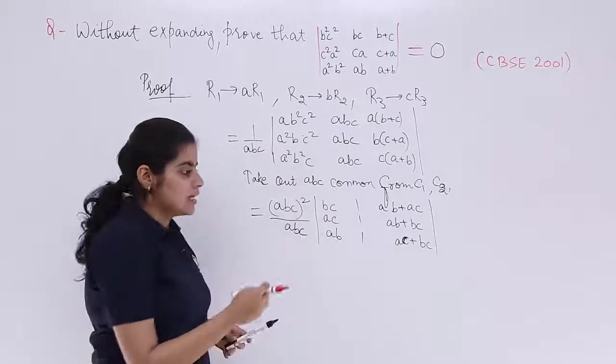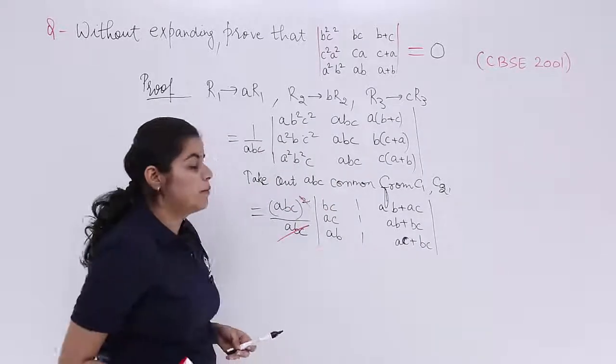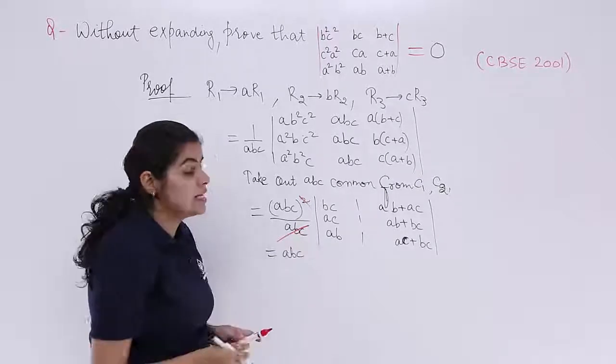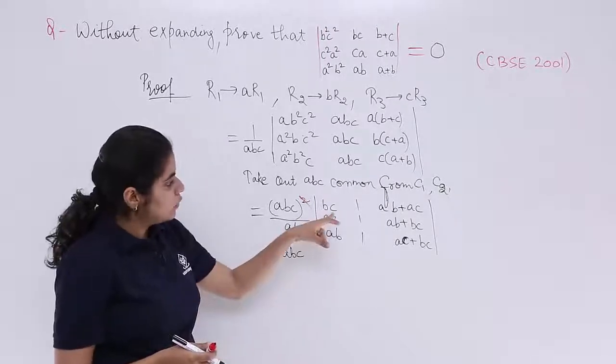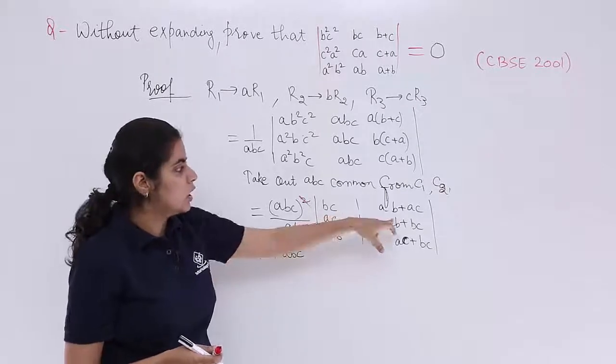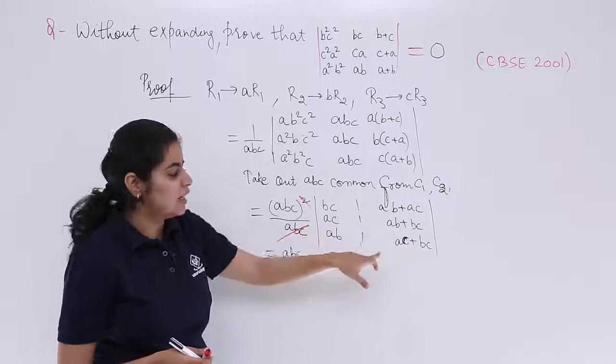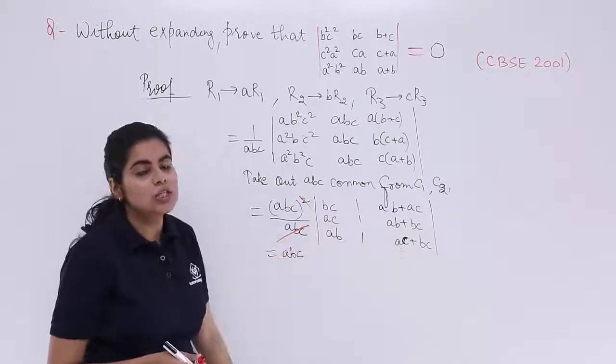Now see, here things cancel. Things cancel for our betterment. ABC is outside. I write ABC is outside. Inside is what? Inside you find here it is BC. Here BC is not there. You find AC, here AC is not there. You find AB, here AB is not there.